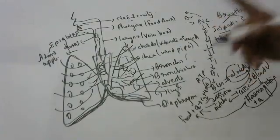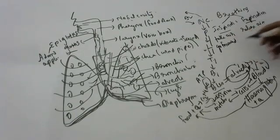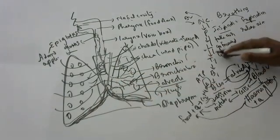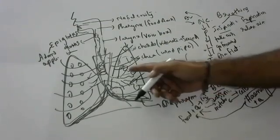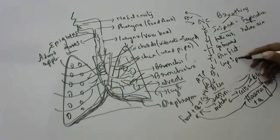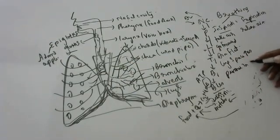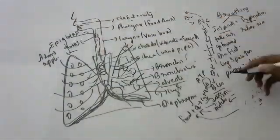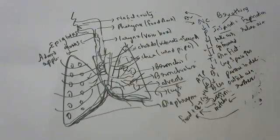During inspiration, the ribs in the front of the chest go forward. The diaphragm, which is dome-shaped, becomes flat. When the diaphragm becomes flat, the space inside the lung increases. When lung space increases, the pressure inside decreases. When the pressure inside decreases, outside air rushes inside. This is inspiration.